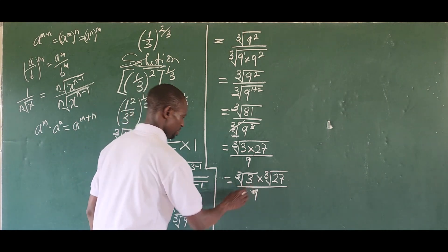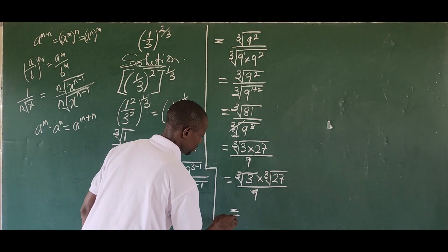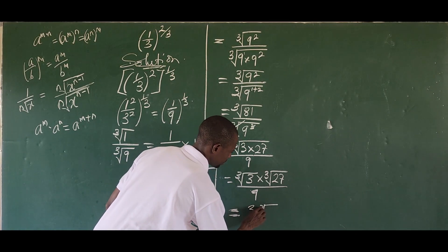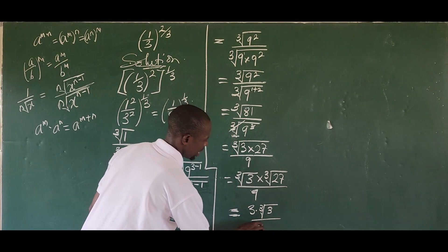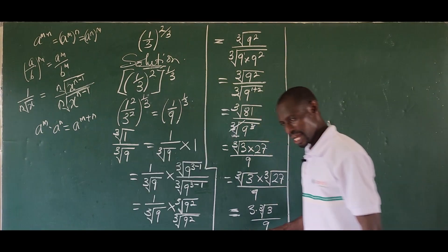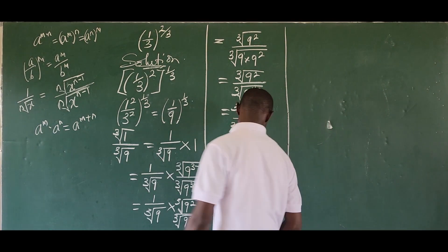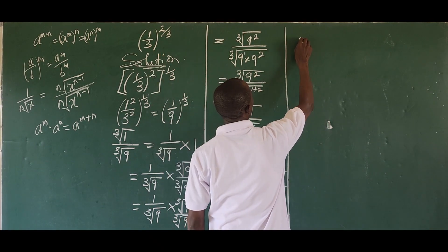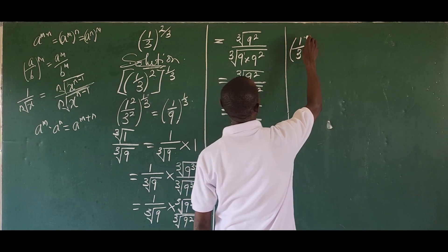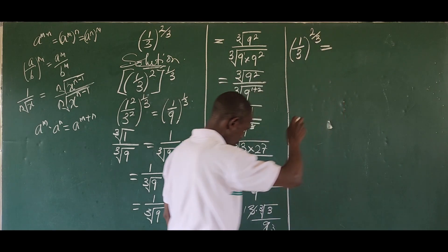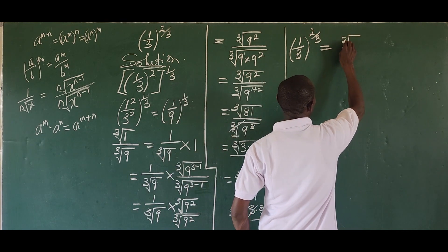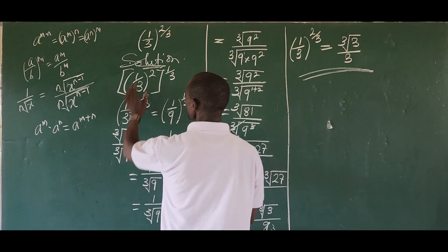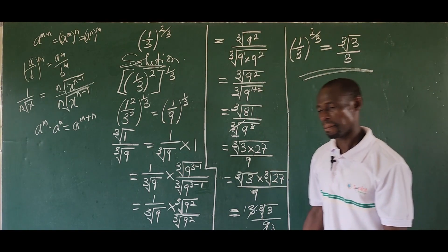According to the laws of radicals, we can rewrite this as the cube root of three times the cube root of 27, all over nine. The cube root of 27 gives us three, so we have three times the cube root of three, all over nine. Three divides into three and nine, leaving one and three respectively. Therefore we can conclusively say that one all over three, raised to the power of two all over three, equals the cube root of three, all over three.